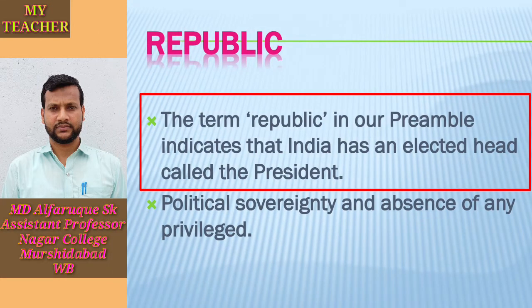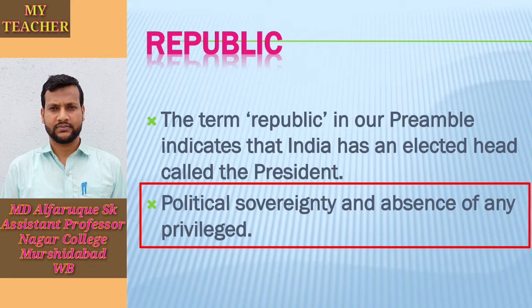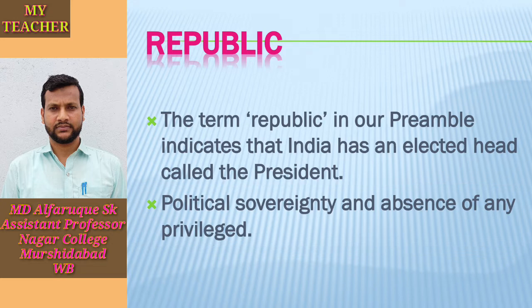The term republic in our preamble indicates that India has an elected head called the President, who is elected indirectly for a fixed period of five years. A republic also means two more things: one, vesting of political sovereignty in the people and not in a single individual like a king; and second, the absence of any privileged class, and hence all public offices are open to every citizen without any discrimination.